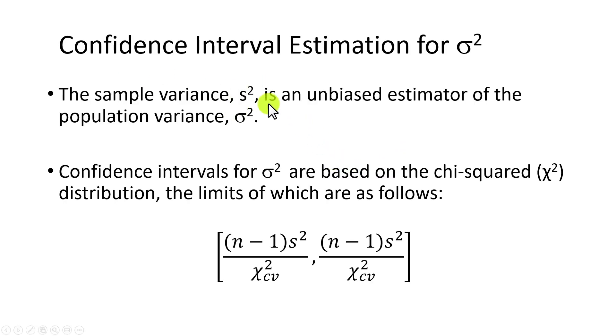As you know, the sample variance s² is the estimator for the population variance σ². Variance, or its square root equivalent standard deviation, is a measure of variability and tells us how dispersed or how spread out the outcomes of a process are.